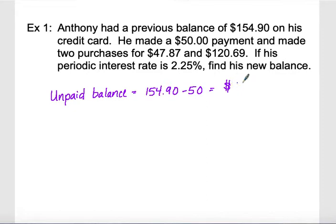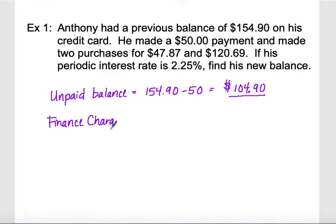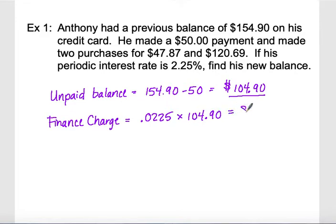We start with his previous balance and subtract out his $50 payment, leaving an unpaid balance of $104.90. Now we calculate the finance charge. Since our periodic rate for the month is 2.25%, we put that as a decimal — 0.0225 — and multiply it by our unpaid balance of $104.90. That gives us an interest charge of $2.36.